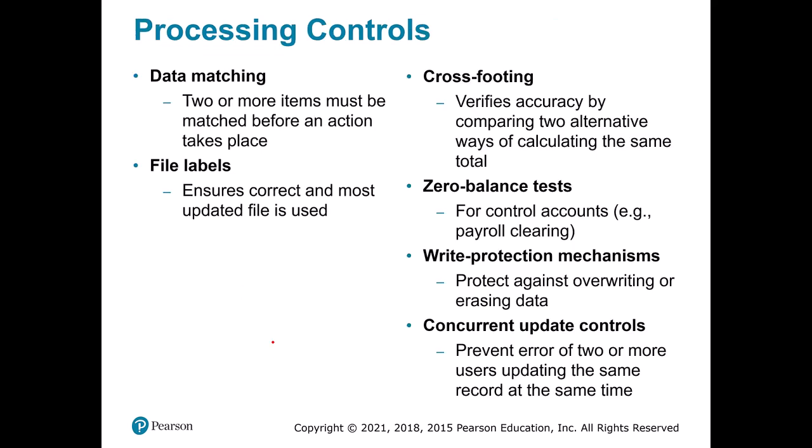Other processing controls include data matching — for example, with a purchase order, sales order, shipping, and invoicing documents in the revenue cycle, making sure they all go together before you issue a check. Cross-footing is a standard technique where you look at a spreadsheet and perform the same calculation twice in a different way to verify that the rows and columns are totaled properly and that you get the same result.